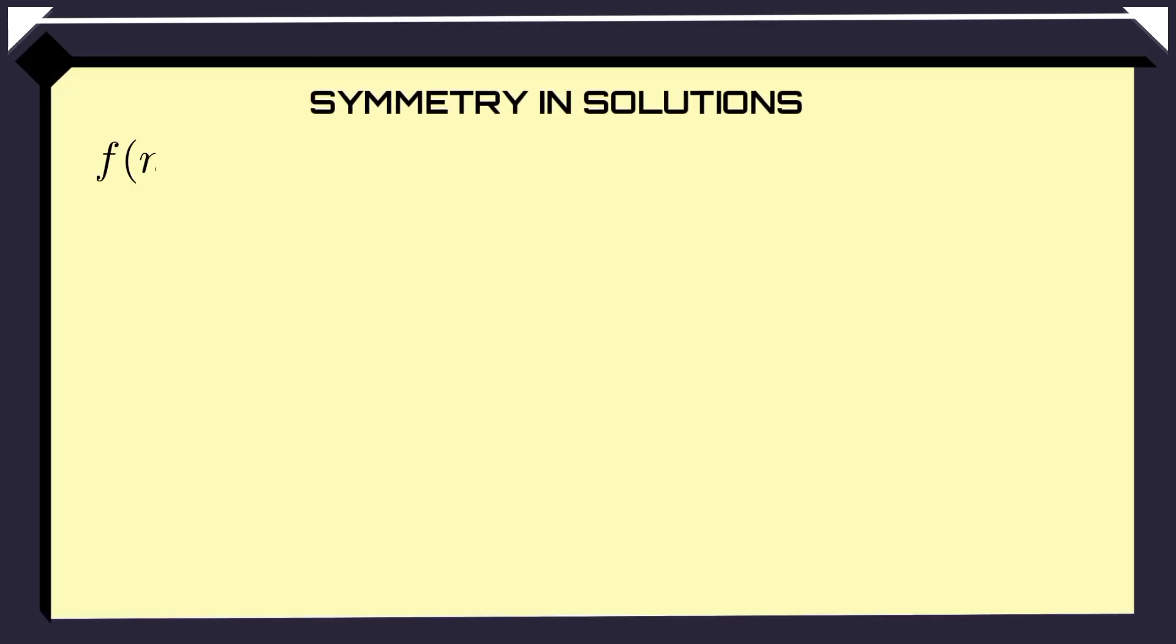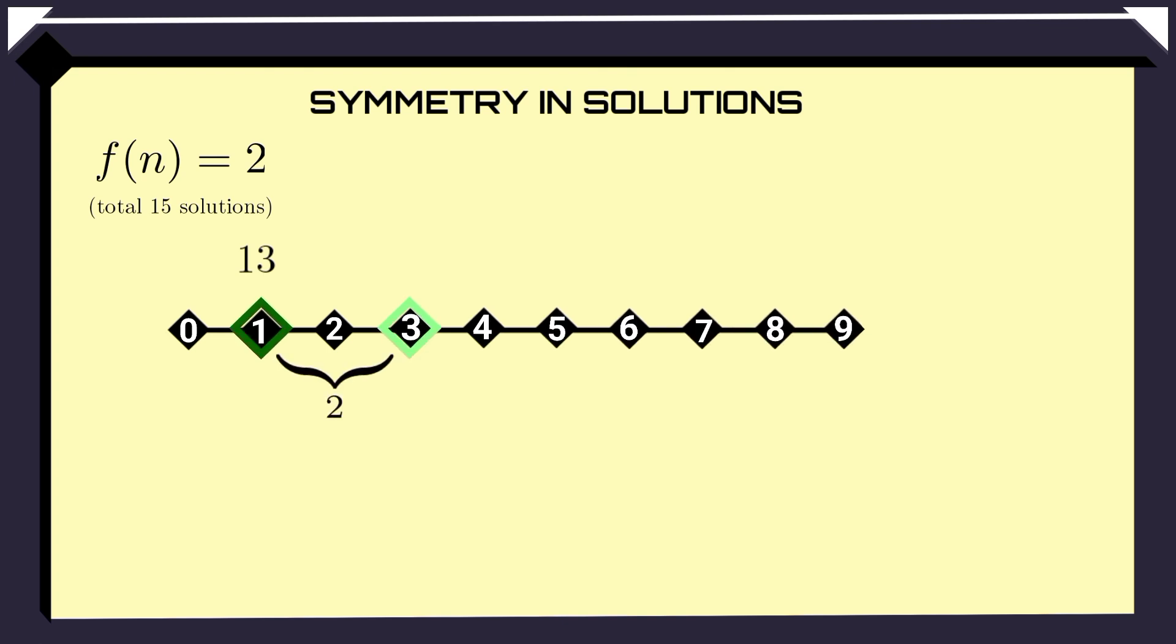Let's go back to the equation F of n equals 2 and focus on its two-digit solutions. Let's take one of the solutions, 13. We can represent it visually like this. Now, if we add 1 to both digits of 13, we get 24, which is also a solution. Visually, it's like moving to the right, and we can keep doing this. So, we can generate many solutions from a single solution. And we can also subtract 1 from each digit to get other solutions.